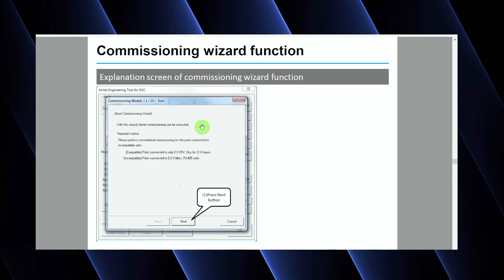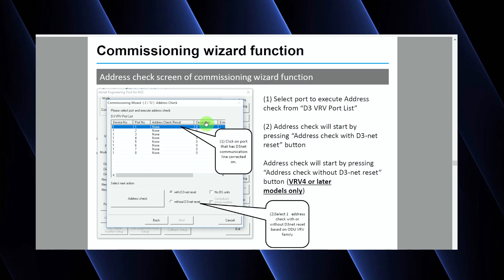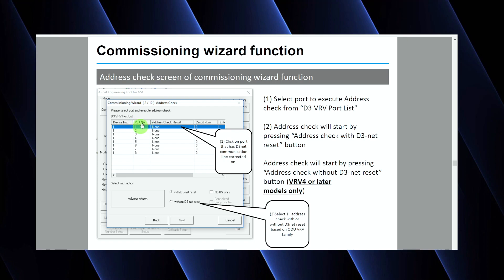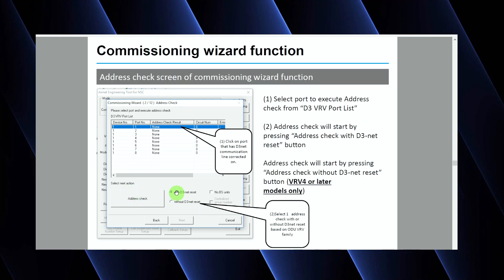It says you're about to do the commissioning wizard. Just click the 'Next' button — it's going to take you to the next step. The next step is where you're going to have to have the system verify the port of the ITM. What it's going to basically do is scan port one. So if you had your ITM with all the wires hooked up to the back of it, port one is going to be the back of the ITM. If you had an expansion module, that's port two, three, four, however many you had. Click the port that you want to check and then hit 'Address Check.' Sometimes it will error out depending on the version of VRV that you have — sometimes you will have to click 'Without D3 Net Reset' and then click address check. But for the most part, you're going to click 'With D3 Net Reset,' click address check, and then go to the next step.